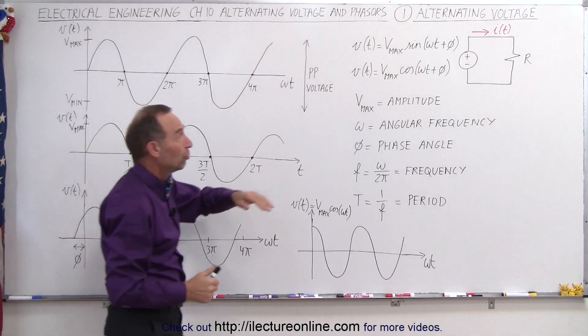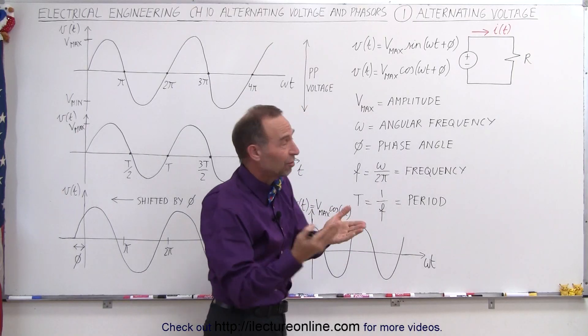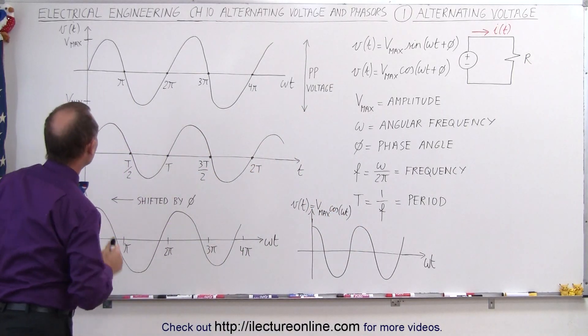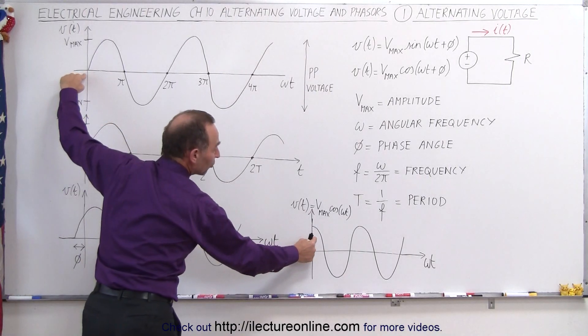So again, notice that we can use both the sine and the cosine. It really makes no difference. It actually just simply means that when t equals zero, we start at a different point. This would be the sine function, and here this would be the cosine function.